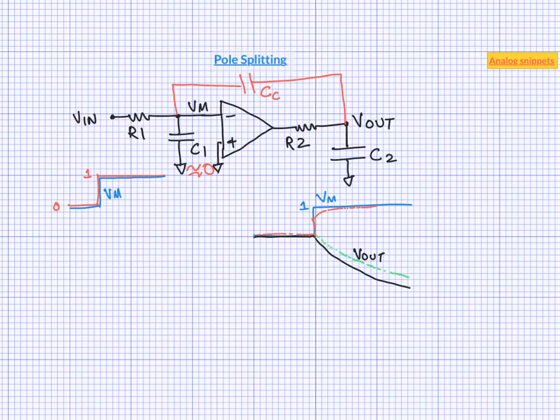So to summarize, the Miller capacitor, however small, is always going to make the system slower. In other words, the Miller compensation is always going to move the first pole to the lower frequency.